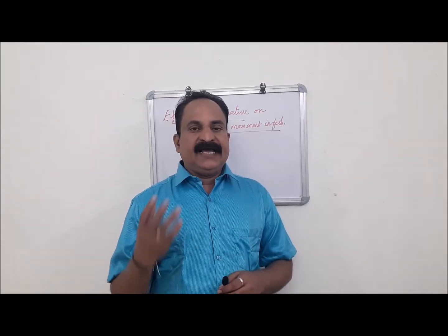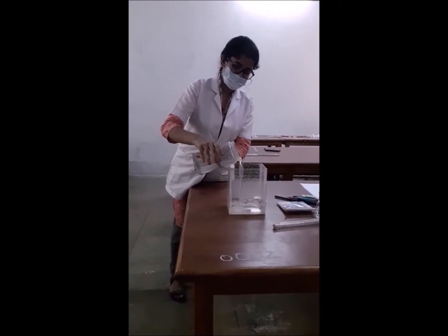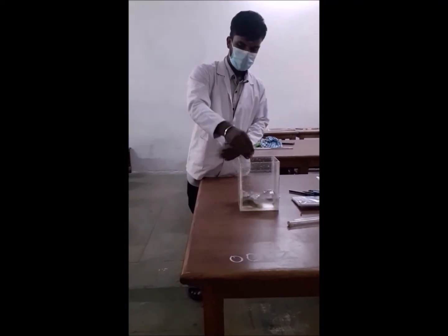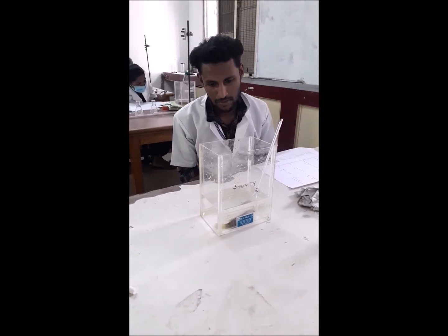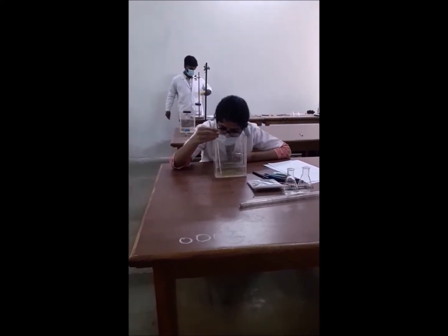Let us see the procedure of this experiment. The materials required are a fish tank, a healthy fish, 500 ml of pond water, a thermometer, hot water, and ice cubes. Introduce a healthy fish into the fish tank and keep the fish for 10 minutes for acclimation to laboratory conditions. Observe the water temperature with the help of a thermometer.